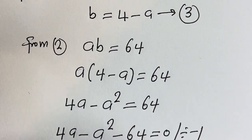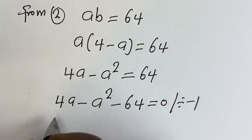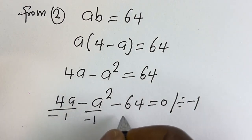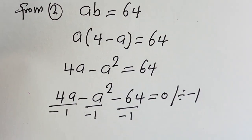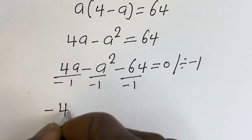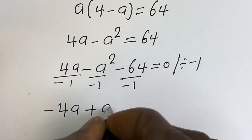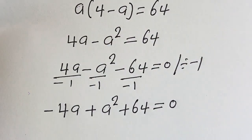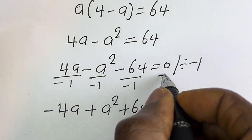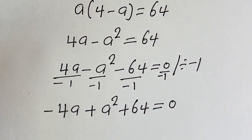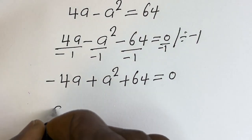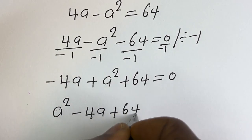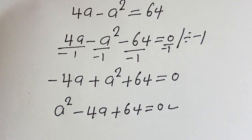Let's divide through by minus 1. This divided by minus 1 gives us: minus 4A plus A squared plus 64 is equal to 0, because 0 divided by minus 1 is equal to 0. So here we have A squared minus 4A plus 64 is equal to 0. This is a quadratic equation.